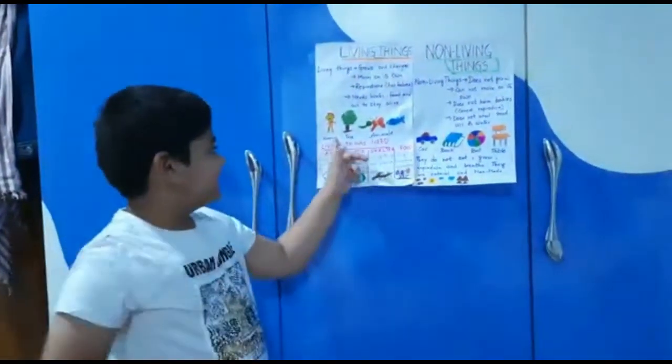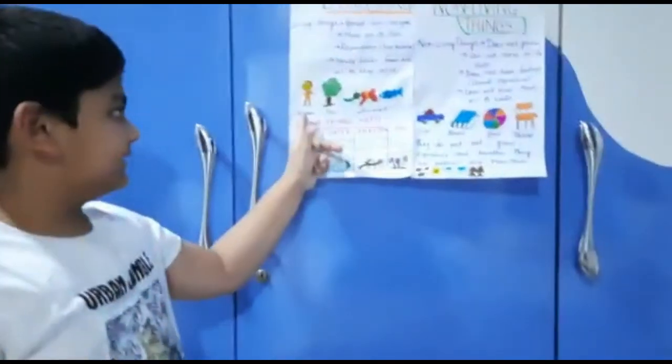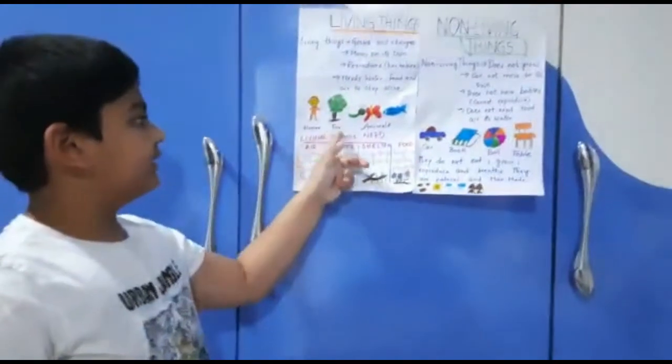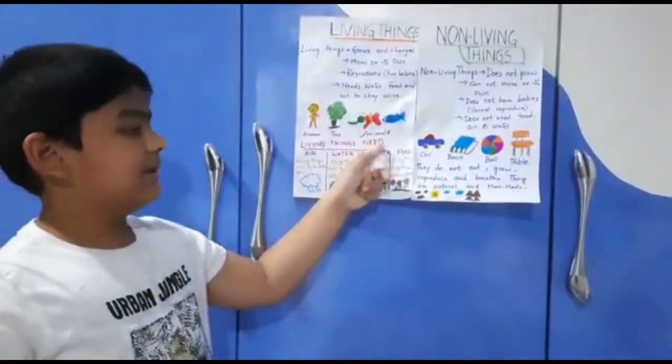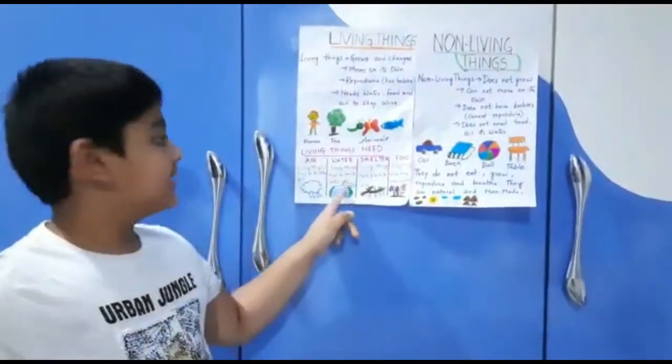These are the examples of living things: human, tree, animals, plants. There are more than this.